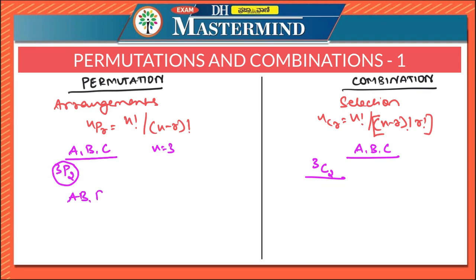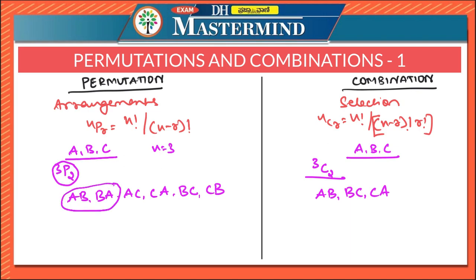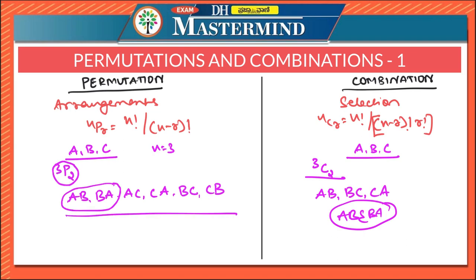When we make all the permutations with the letters A, B, C taking two at a time, we get: AB, BA, AC, CA, BC, and CB as arrangements. Whereas when we do the same thing with combination, we get: AB, BC, and CA. Note that AB and BA are two different permutations while AB and BA are the same combination. When three letters are arranged two at a time, we get six outcomes; when we select two out of three, we get only three possibilities.